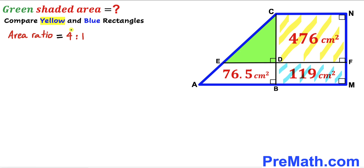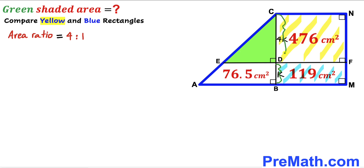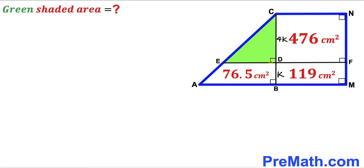Since the area ratio is 4 to 1, we conclude that if one side length is 4k then the other side is k, for some constant k. So the two side lengths are k and 4k.